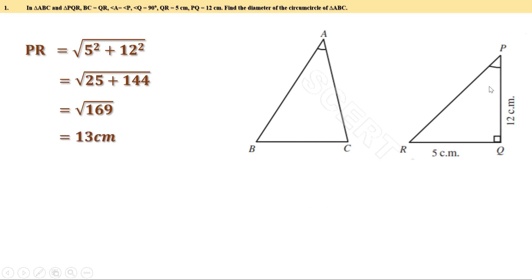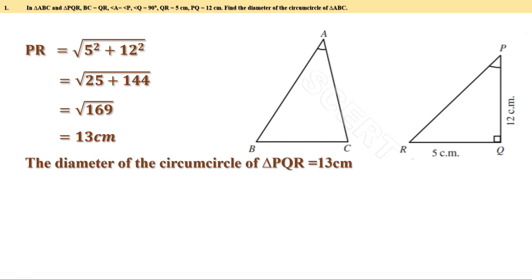Root of 169 is 13, therefore the length of PR is 13 cm. Now, triangle PQR is a right angle triangle, therefore the circumcenter of this triangle is the midpoint of PR, or PR is the diameter of the circumcircle of triangle PQR. Therefore, the diameter of the circumcircle of triangle PQR equals 13 cm. But we are asked to find the diameter of the circumcircle of triangle ABC.